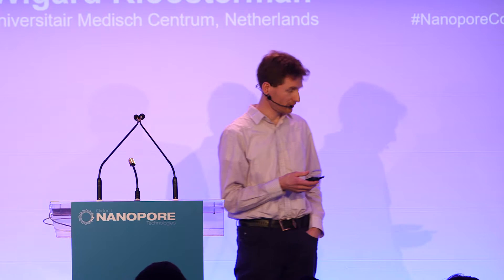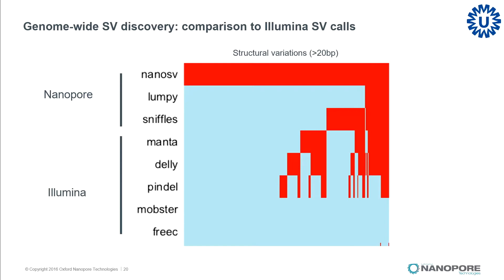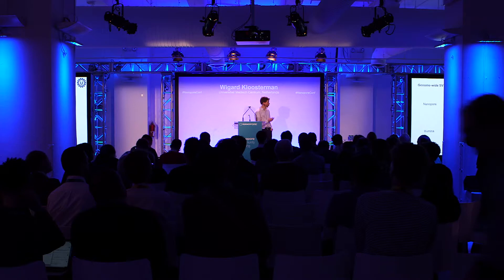Another question we asked is: if we go genome-wide and not focus only on these chromothripsis rearrangements, what can we get from this data? We pulled out all possible structural variation callers to call SVs in the Illumina data — five different callers capturing many different flavors of structural variations. Then we used three different callers for the nanopore data and compared the call sets. There are many data specific to nanopore, a substantial amount overlapping between many call sets — both Illumina and nanopore — and some overlapping only between nanopore-only call sets.